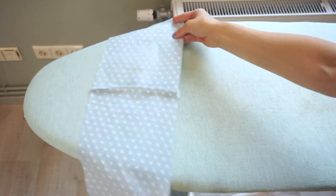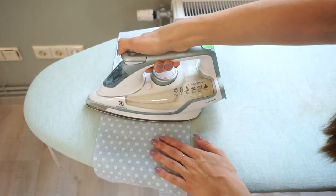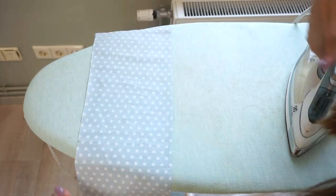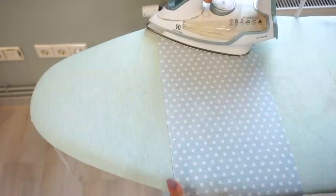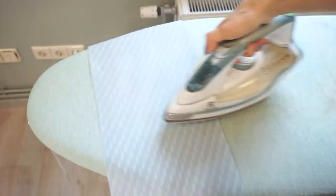Stitch the side seams. This time if you neaten both layers together then press the seam towards the front. If you neaten both layers separately then press them open.